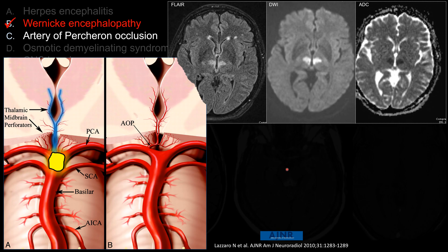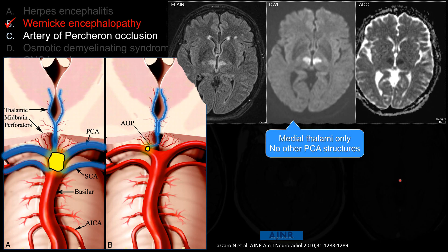However, if you see that, usually you will affect more than just the medial thalami, including infarction involving other structures in the PCA territory and potentially in the superior cerebellar artery territory. If you have an artery of Percheron variant, a thrombosis can be quite small, causing obstruction at the origin of the common trunk, causing selective infarction of the medial thalami without affecting other areas in the PCA territory. That is artery of Percheron infarction involving the medial thalami bilaterally only, without affecting other PCA structures.